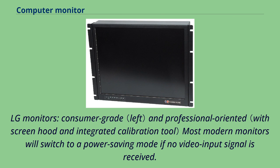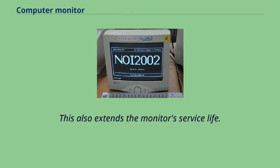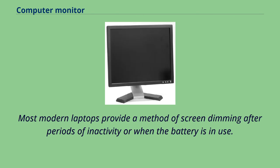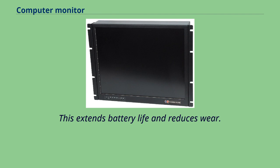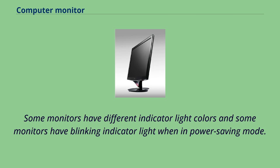Most modern monitors will switch to a power-saving mode if no video input signal is received, allowing modern operating systems to turn off a monitor after a specified period of inactivity. This also extends the monitor's service life. Some monitors will also switch themselves off after a time period on standby. Most modern laptops provide a method of screen dimming after periods of inactivity or when the battery is in use, extending battery life and reducing wear. Most modern monitors have two different indicator light colors: green when a video input signal is detected, and orange when the monitor is in power-saving mode.